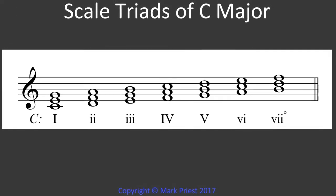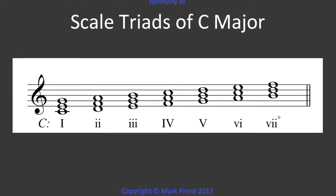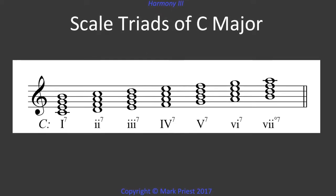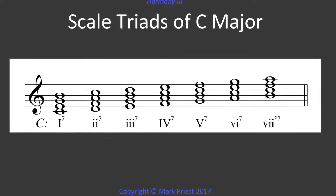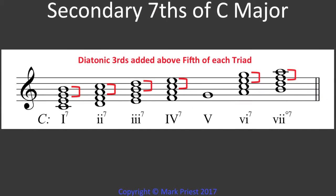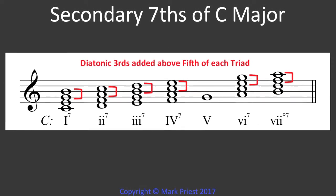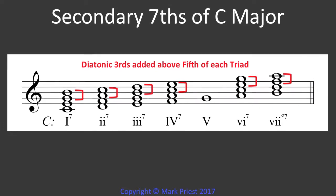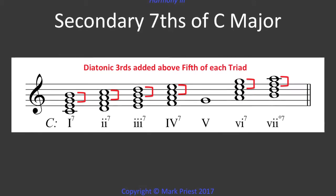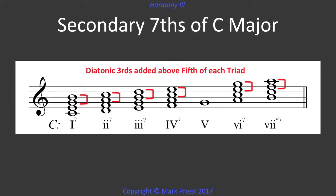How did we get from three-note triads to these four-note chords? Let's make one thing clear. These new 7th chords are not dominant 7ths, because dominant refers only to the 5th degree of the scale — the V or V7 chord. Rather, these 6 chords are secondary 7ths, built by attaching a diatonic 3rd above the 5th of each scale triad.